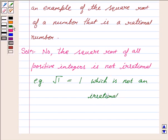Also, one more example we have. Root of 4 is 2, which is also not irrational.